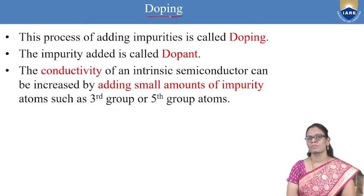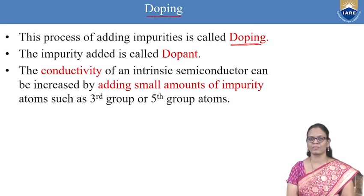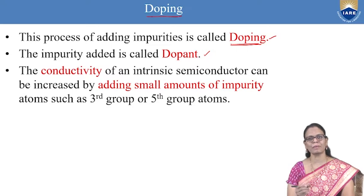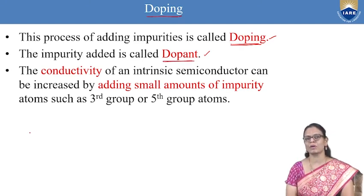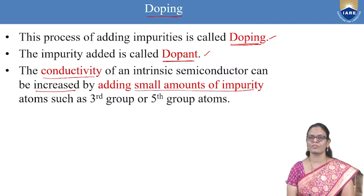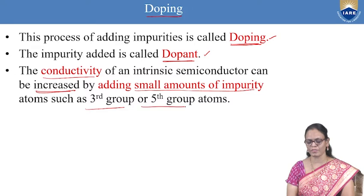The process of adding impurity is called doping. When we take an intrinsic semiconductor and add an impurity — either trivalent or pentavalent — this process is called doping, and the impurity added is called the dopant. The conductivity of an intrinsic semiconductor can be increased by adding small amounts of impurity from the third or fifth group.